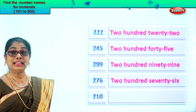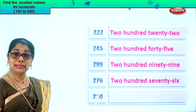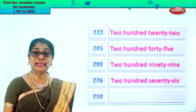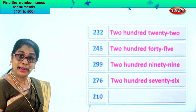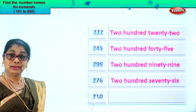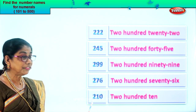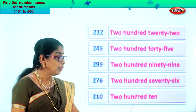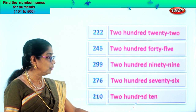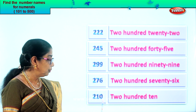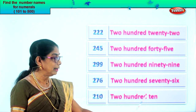Let's look at another numeral. You have zero in the ones place, one in the tens place, and two in the hundreds place. Read: two hundred ten. So first we write two hundred, then you have ten, so you write ten. Two hundred ten.